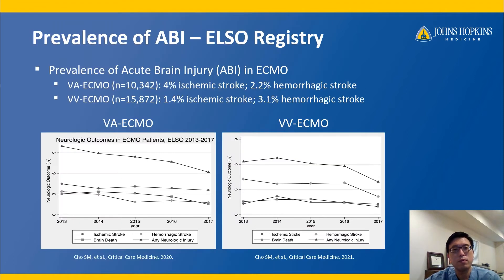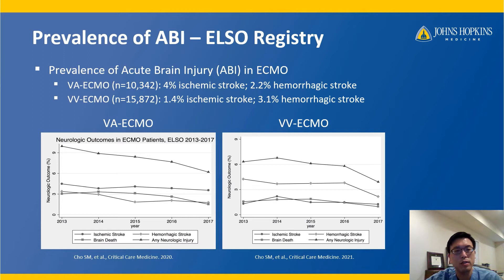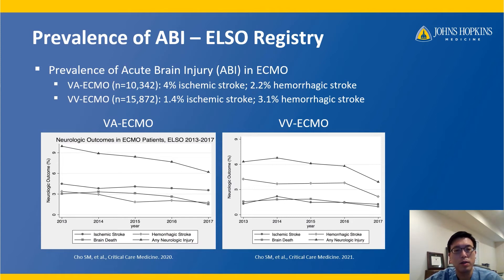Now let's talk about prevalence of ABI. The ELSO registry is the largest international ECMO database out there. For VA ECMO patients — more than 10,000 patients — about 4% had ischemic stroke and 2% hemorrhagic stroke. For VV ECMO, about 16,000 patients, about 1.4% ischemic stroke and 3% hemorrhagic stroke. The trend is there but not statistically significant over 2013 to 2017, and it's under 10% for all neurologic complications. The caveat is that the ELSO registry, because of the lack of an adjudication process, probably underestimates the true prevalence of ABI.